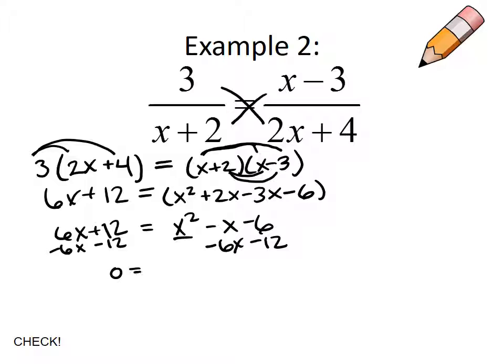That leaves me with a 0 on the left side. I bring down my x squared. I have a negative 1 subtract 6, negative 7. I have a negative 6 subtract 12, negative 18.